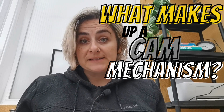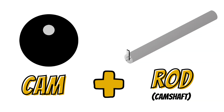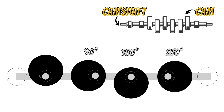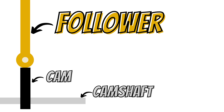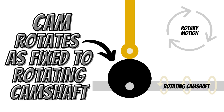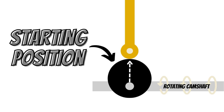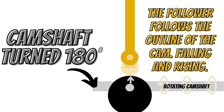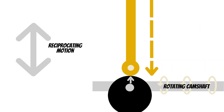What makes up a cam mechanism? Well it consists of two main parts. A cam which is attached to a rod known as a camshaft. This rod rotates which is what moves the cam in a rotary motion. The second part is a follower. The follower touches the cam and changes the rotary motion into a reciprocating motion as the follower follows the shape, making it move up and down.